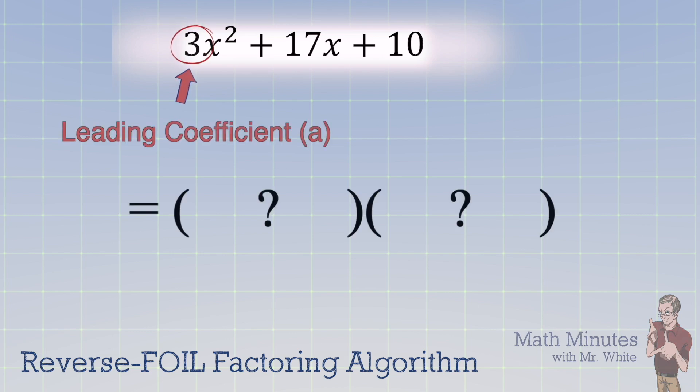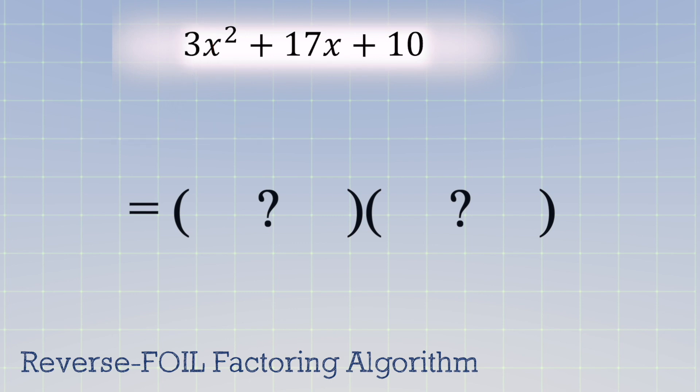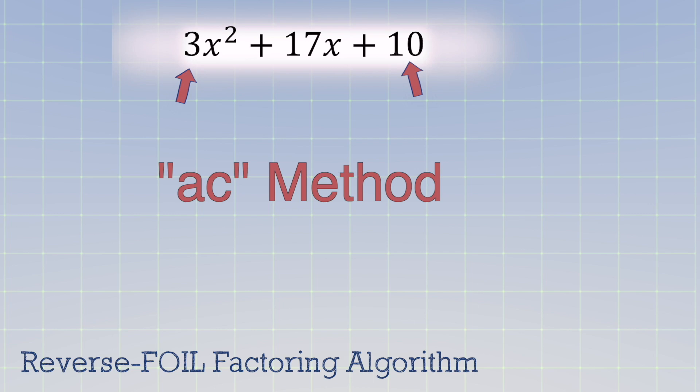Factoring trinomials where that leading coefficient is not 1, for example, here you see it's 3x squared, is a little more complicated to factor using guessing and checking. So there are some algorithms, but I'm going to show you one here. Some people call it the AC method, and here's how it goes.